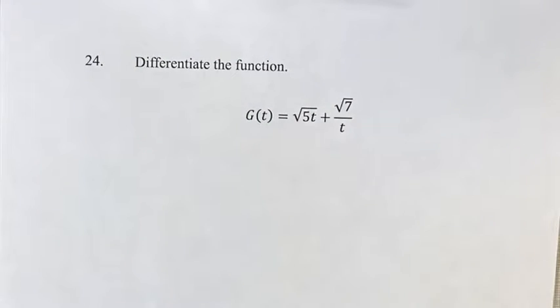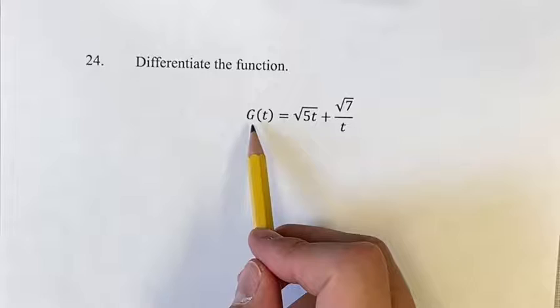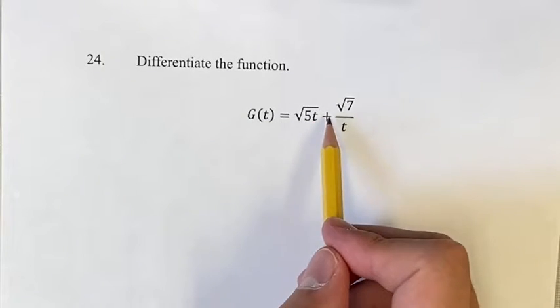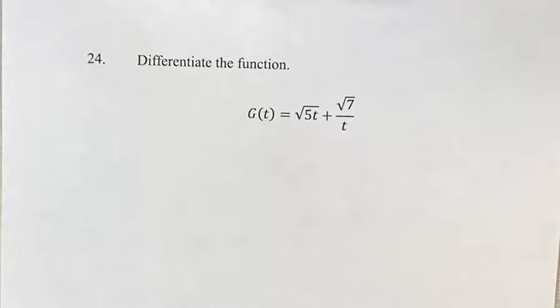Hello and welcome back to another video. This problem is to differentiate the function g of t, which equals the square root of 5t plus the square root of 7 divided by t.